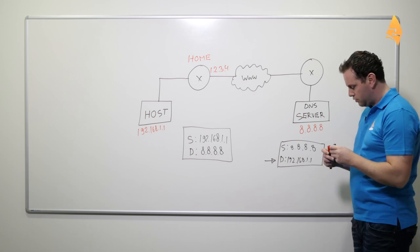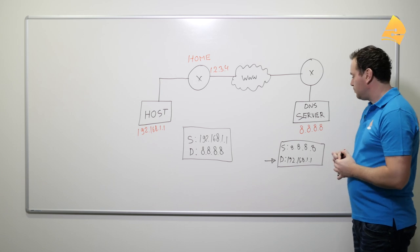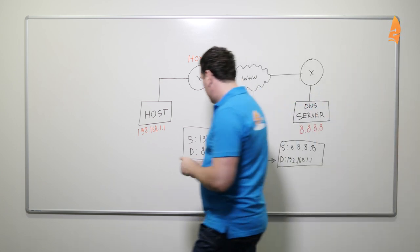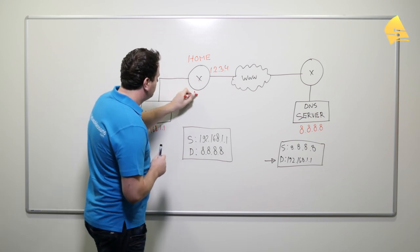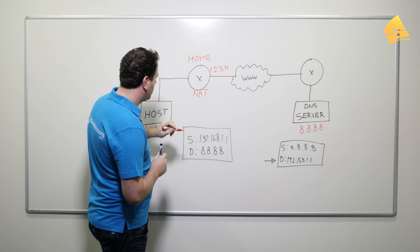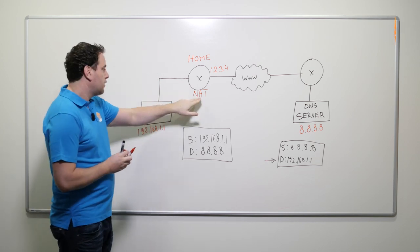So what we have to do is we need to use network address translation. Now, how does it work? We'll enable it on this router, on our router at home.